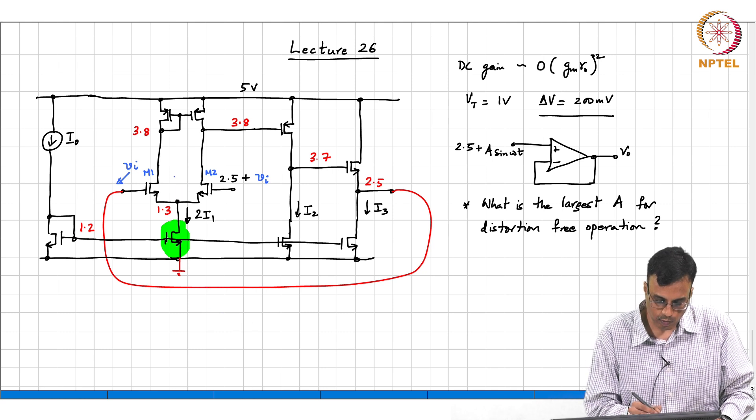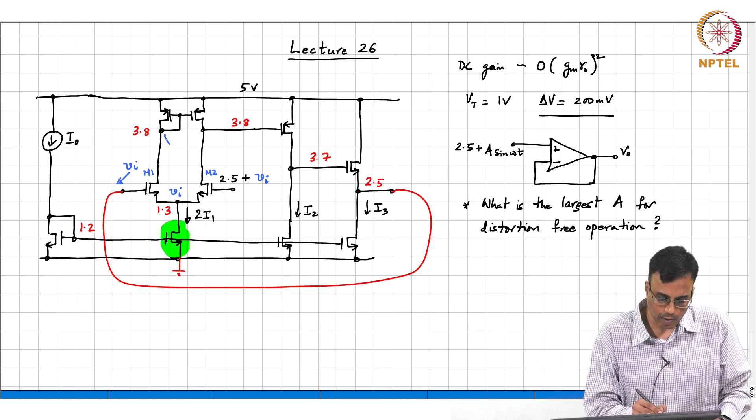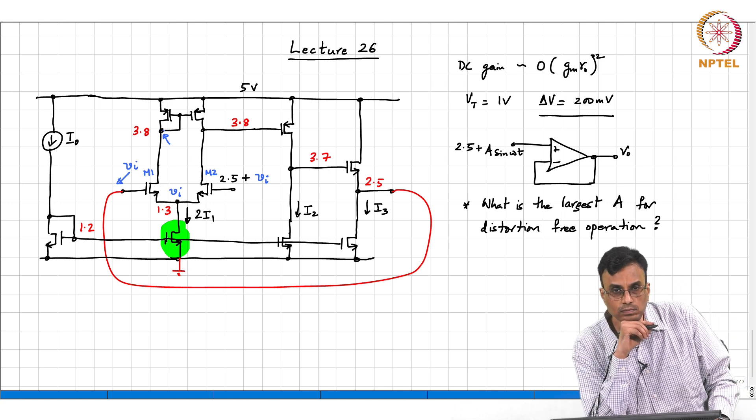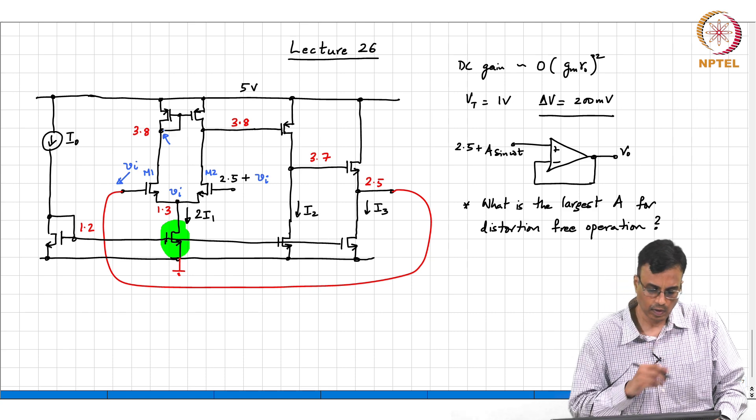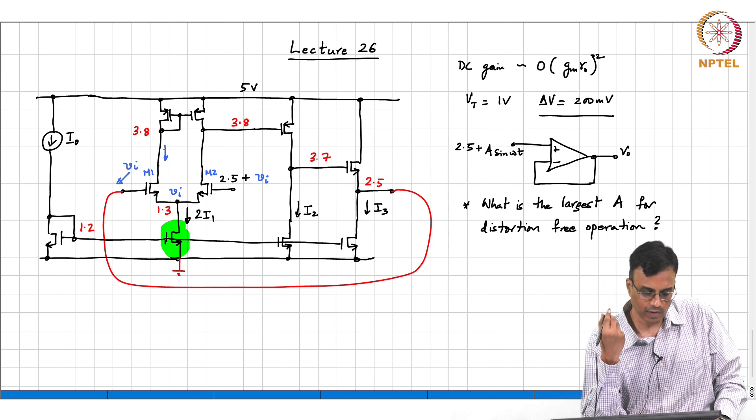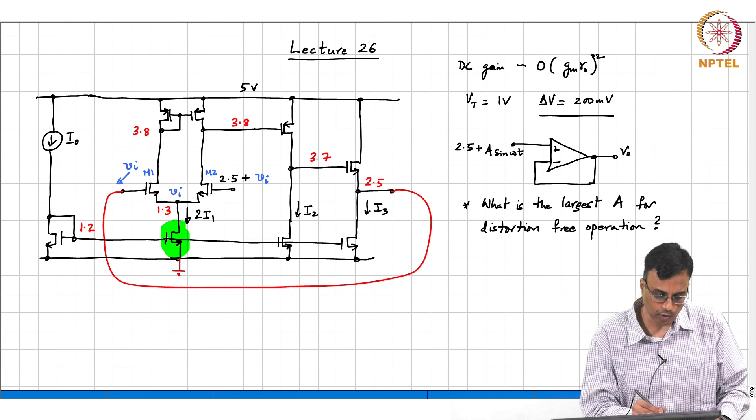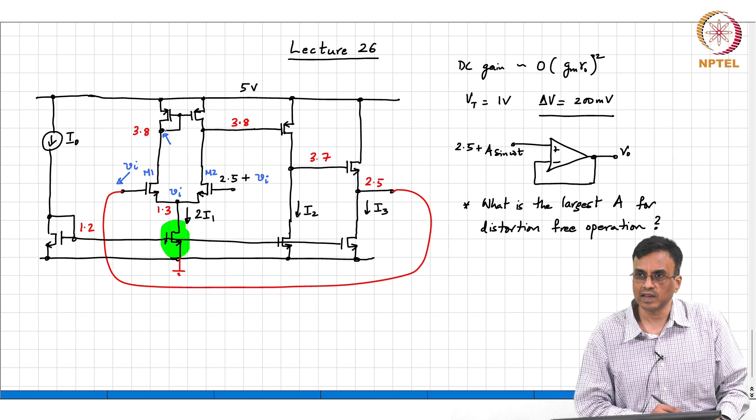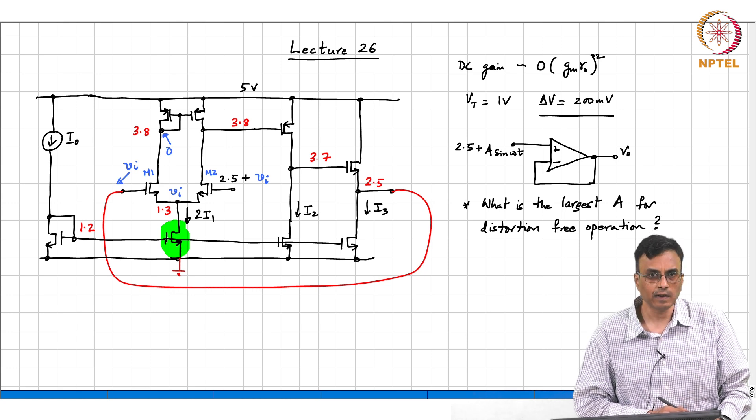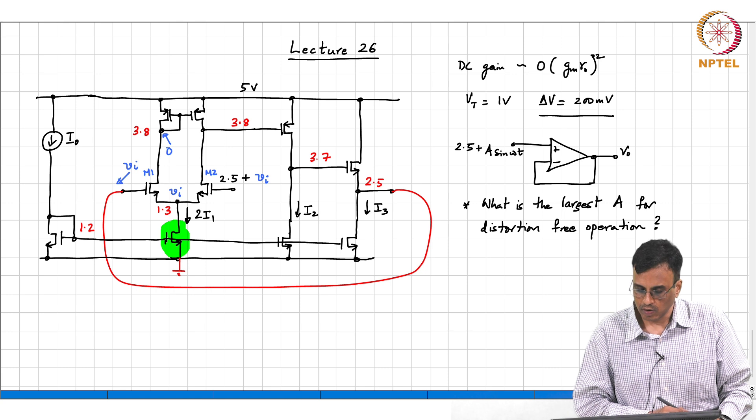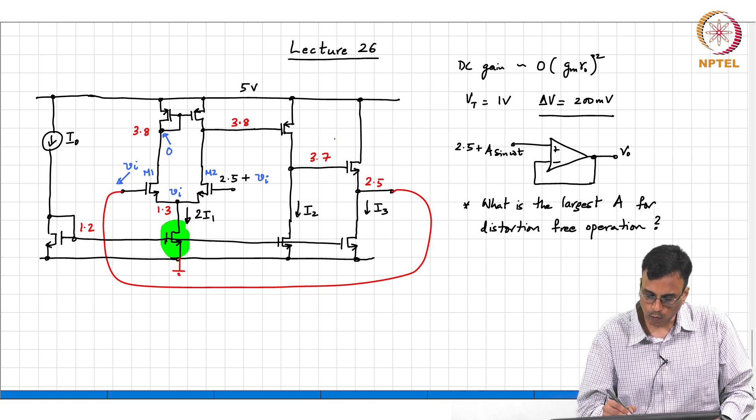So, what comment can you make about the incremental voltage there? Yeah. Incremental Vgs is 0. So, the current flowing here is 0. So, what comment can you make about the voltage there? Incremental voltage there? Incremental voltage there is 0. Is this clear?